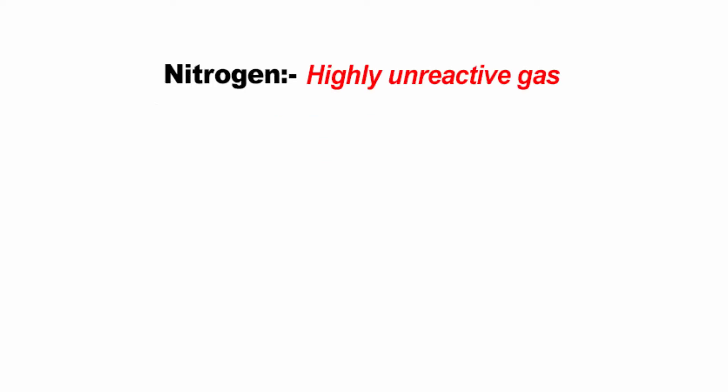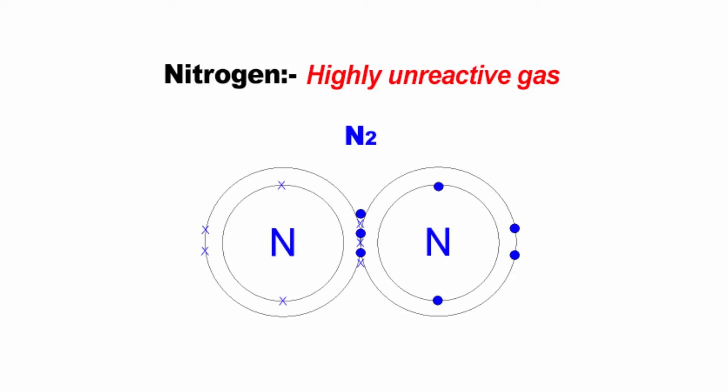Nitrogen is considered an unreactive gas. Nitrogen gas is formed when two nitrogen atoms bond together. Together they form a triple bond. In chemistry, you must have heard about single, double and triple covalent bonds. They represent strength between atoms.